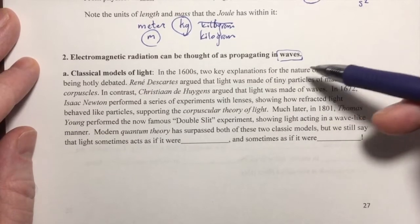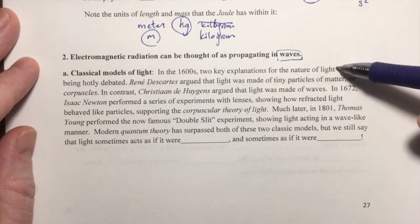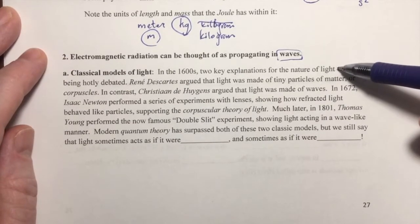Basically in the 1600s, there's a very important debate going on about the nature of visible light. Visible light, as I just said, is a type of electromagnetic radiation.